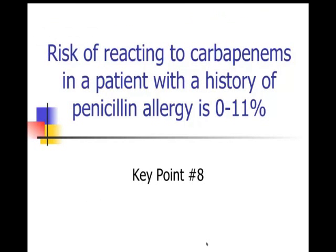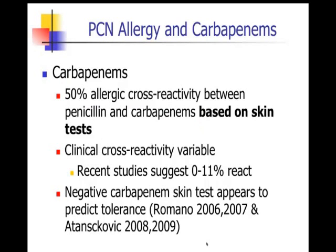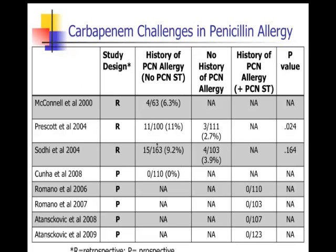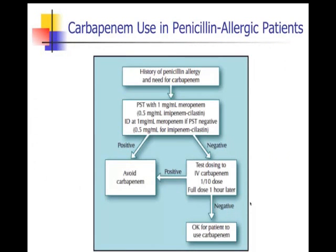For carbapenems, the reaction rate ranges from 0 to 11 percent. Early skin testing showed 50% cross-reactivity, but real-life reactions tell a different story. Retrospective studies show 6-11% reaction rates, but prospective studies of carefully identified truly penicillin-allergic patients show essentially none reacted to carbapenems. One approach is skin testing with the carbapenem — less than 1 in 100 patients will have a positive test. If negative, you can give one-tenth of the carbapenem dose, wait an hour, then administer the full dose.